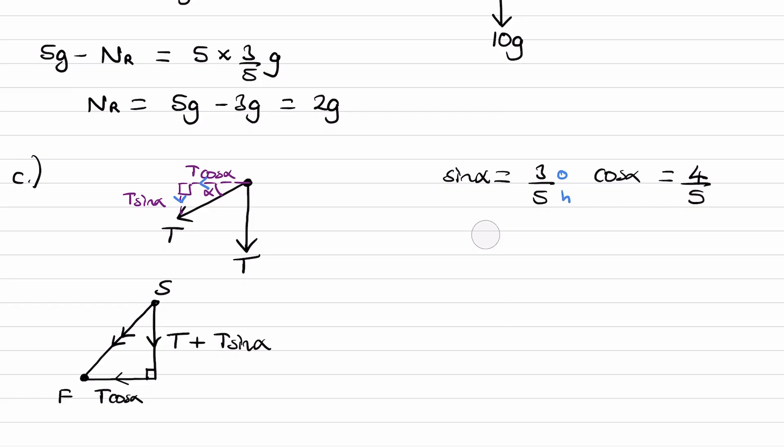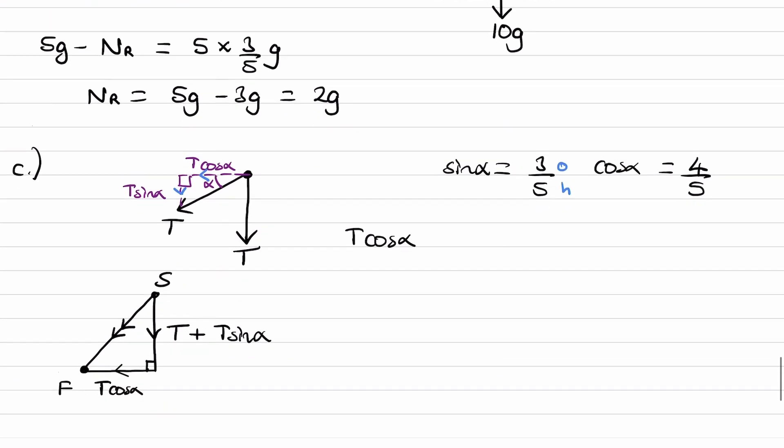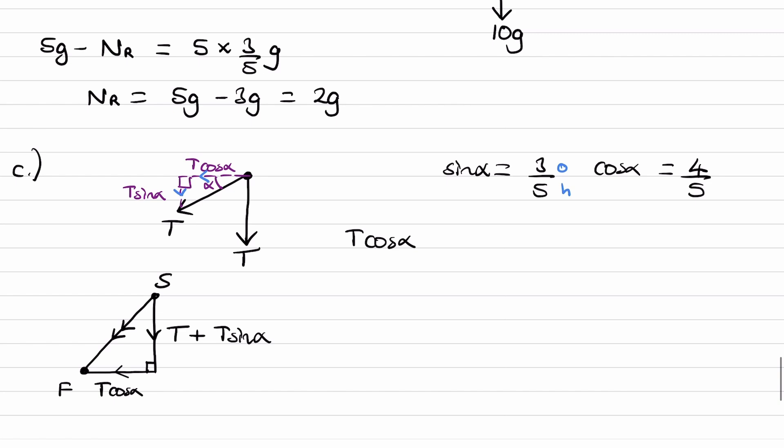So, we need to work out what both of those sides of that triangle are. Let's start with the T cos alpha. So, T was 6G. T is equal to 6G. We then times that by cos alpha, so this is 6G times by 4 over 5, which is 24 over 5 G. And then the T plus T sin alpha is 6G, that's T, plus 6G times sin alpha which is 3 over 5. That would be 6G plus 18 over 5 G which is the same thing as 48 over 5 G.